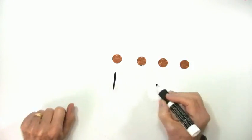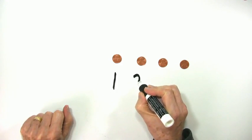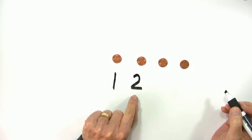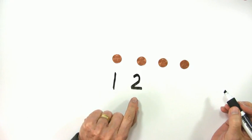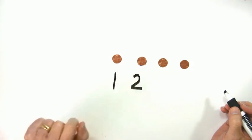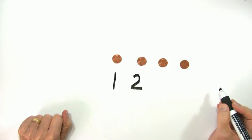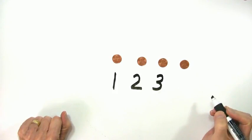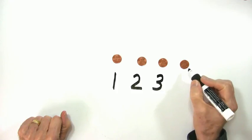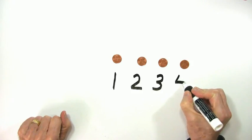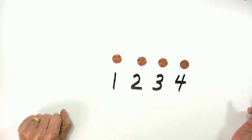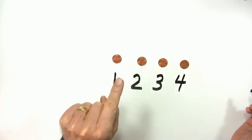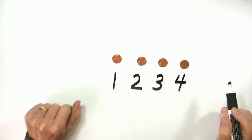Now this is penny number two. So the symbol for two looks like this. We've got the symbol for one and symbol for two. Whenever we see two, we think of one, two pennies, or one, two, whatever else we're numbering. How about three? That's penny number three, and that's the symbol for three. And then this one, that's penny number four. The symbol for four looks like that.